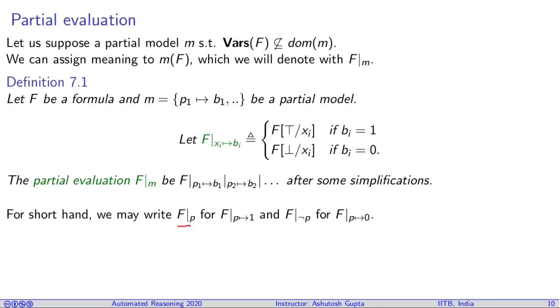We may write projection F projected on P instead of writing P arrow one, essentially this is a literal. Similarly, I write F projected on not P, which means P is assigned to zero.